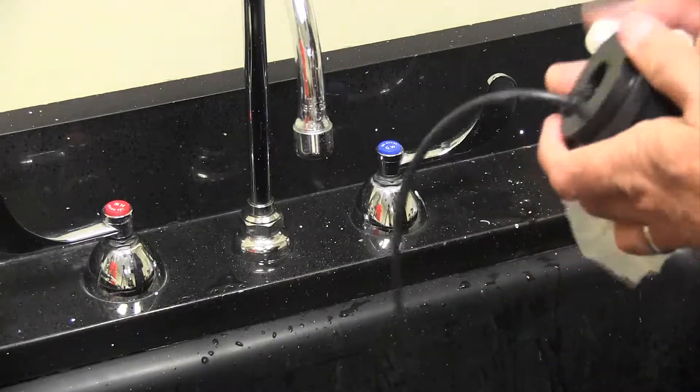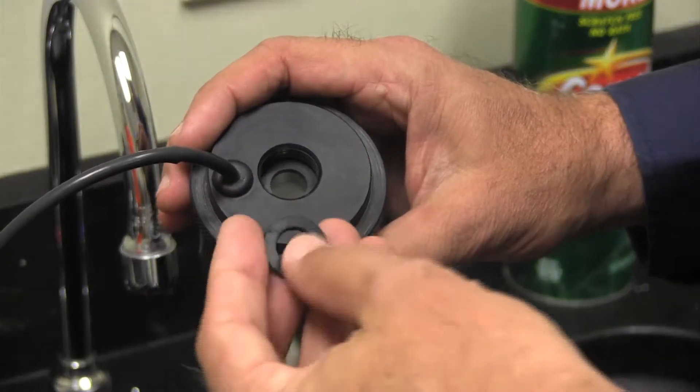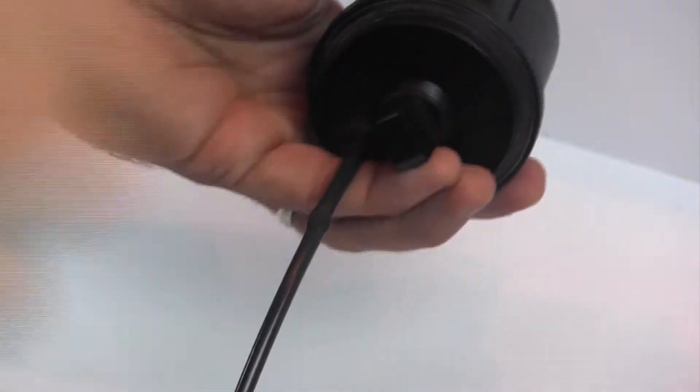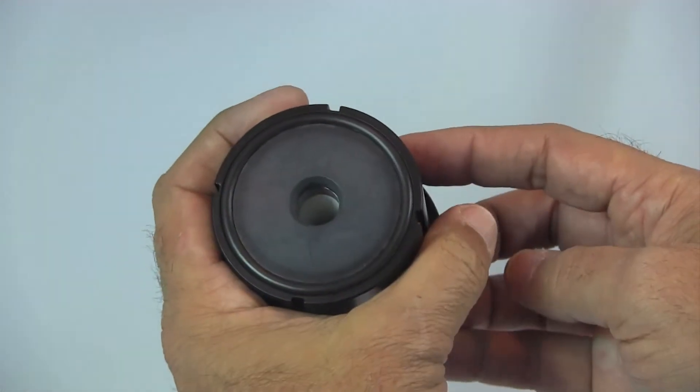Dry the outer probe surfaces. Ensure that the gasket is reinserted before reinstalling the plug, and make sure the o-ring is secure at the other end of the probe cartridge as well.